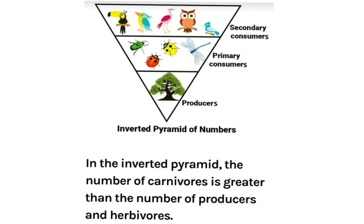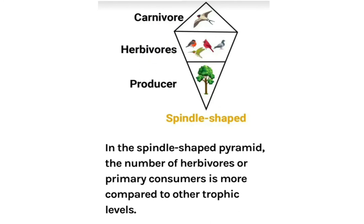The pyramid of numbers may also be inverted. In a tree ecosystem, on a single banyan tree there may be many insects, and those insects may be eaten by many birds — starting with a single tree, many insects, and many birds — making it an inverted pyramid. The pyramid may also be spindle-shaped: a single tree with many herbivorous birds, which are then eaten by a single hawk, making the pyramid partially upright and partially inverted.